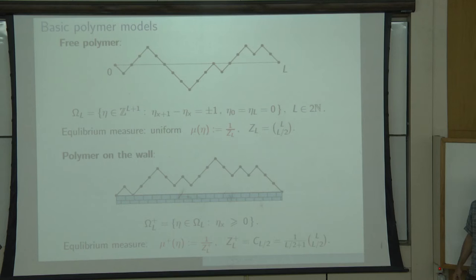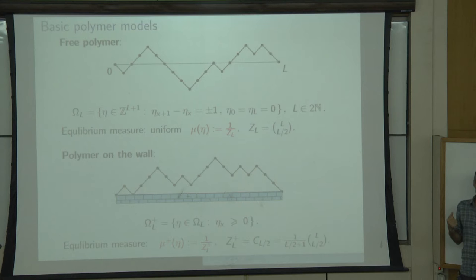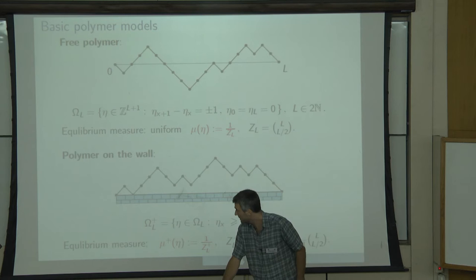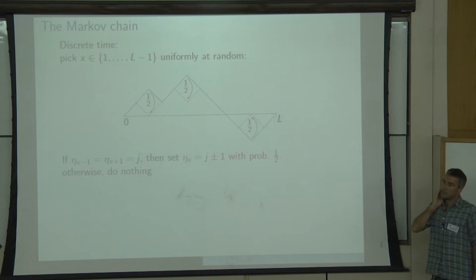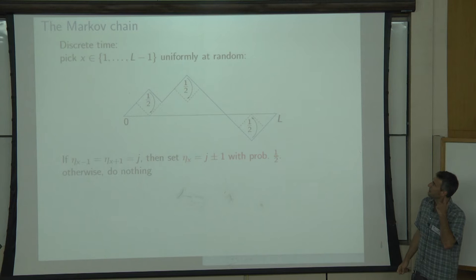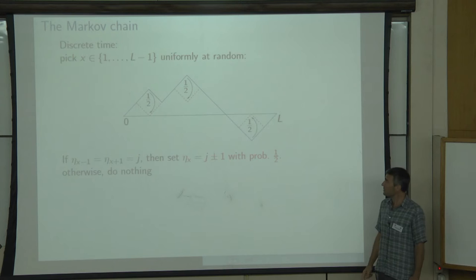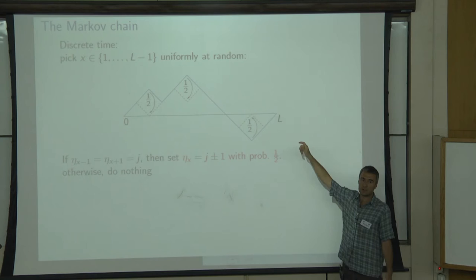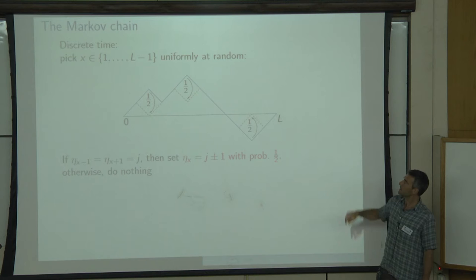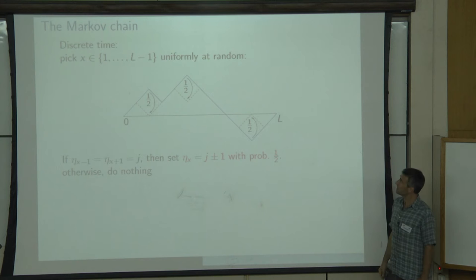I want to now describe a natural Markov chain for these objects and analyze mixing times. In discrete time, this Markov chain is described as follows: pick a site X inside your interval uniformly at random, and try to modify locally your polymer at X. All you can do is switch a mountain into a valley locally or vice versa. If the polymer is flat at that point, there's nothing you can do. If you have a mountain or a valley, you switch it with probability one half each.